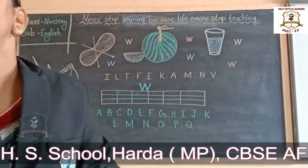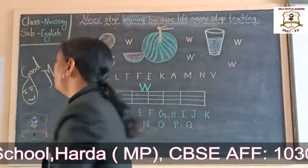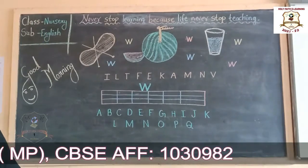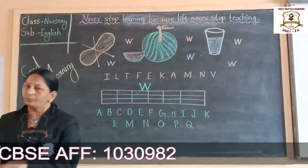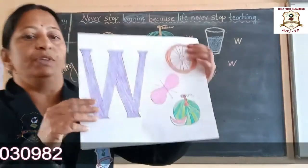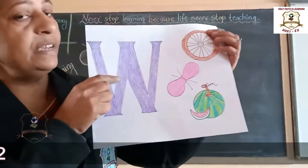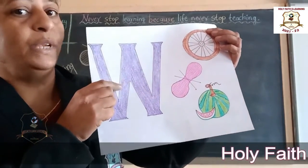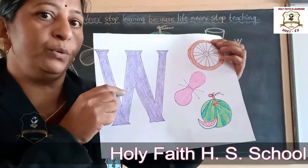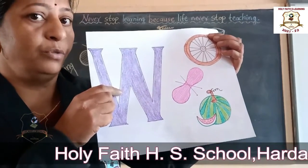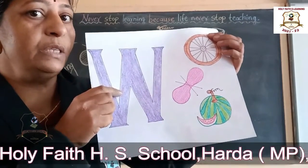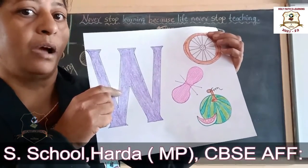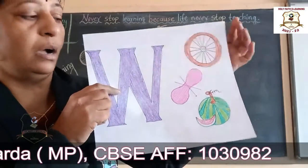And what is the sound of W? What is the sound character of W? Look here. Which letter is this? W. W. Which letter is this? W. And the sound of W is 'W'.